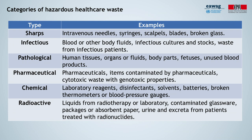Here is a list of categories of hazardous healthcare waste. For instance, sharps — that's needles and syringes, but also blades. Then there is infectious waste: blood, body fluids, or infectious cultures. Pathological waste, which includes human tissue, organs, or body parts. Pharmaceutical waste, which obviously are pharmaceuticals. Then there is chemical waste: reagents, disinfectants, solvents, but also batteries or thermometers containing mercury. And finally, radioactive waste, from radiotherapy or from laboratories.